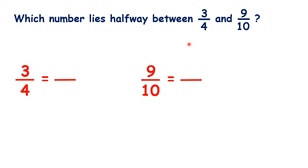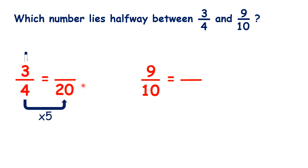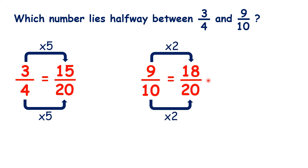So now, how about 3 quarters and 9 tenths? Again, we have fractions with different denominators, but we can find equivalent fractions with the same denominator. 20 is a multiple of both 4 and 10, and 3 quarters is equivalent to 15 twentieths, and 9 tenths is equivalent to 18 twentieths. But this doesn't help us, because the number halfway between 15 and 18 is 16 and a half, and we can't write 16 and a half over 20 as our fraction, so we need to find different equivalent fractions.